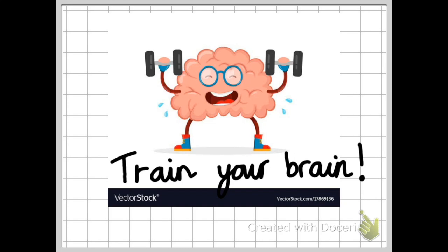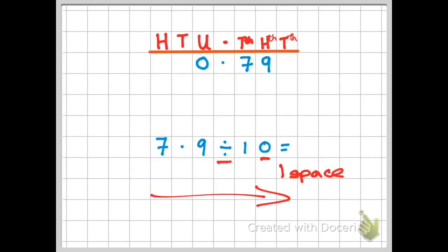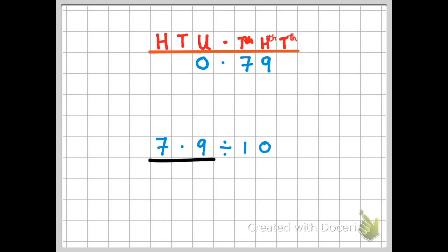If anyone ever tells you to add or take away zeros, you now know that's wrong. What you should do — and train your brain to do — is visualize this place value chart in your head and move the numbers to the right or to the left. By doing that you will always get the right answer. I'll finish with a challenge question: can you work out mentally — no pen, no paper — what 7.9 divided by 100 would be?